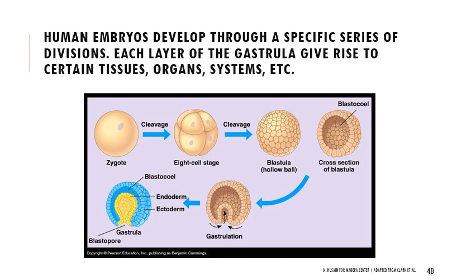After fertilization, we go through zygote, two cells, four cells, eight cells. When we have what's called a blastula, we have many cells forming a hollow ball that folds in on itself through gastrulation to form a gastrula, giving rise to very different tissue layers. Each of those tissue layers — the endoderm, mesoderm, and ectoderm — give rise to different tissues, organs, and systems.